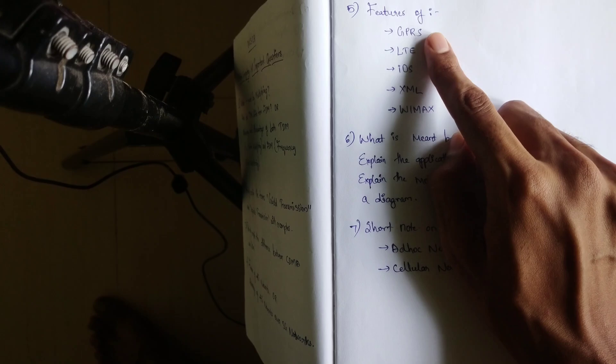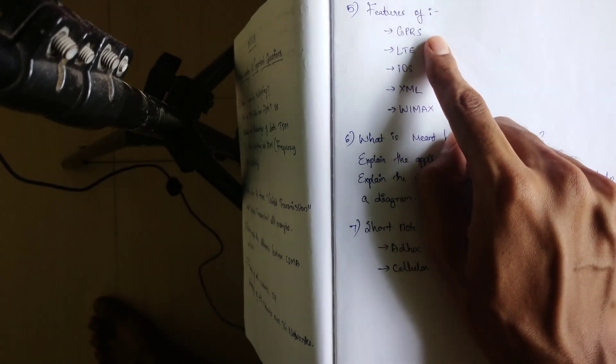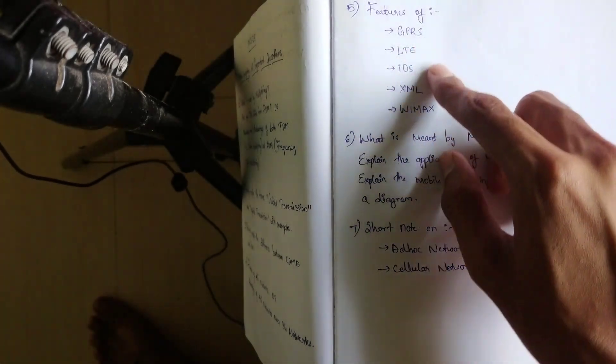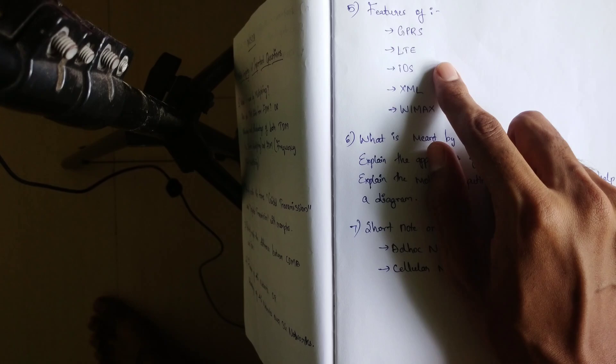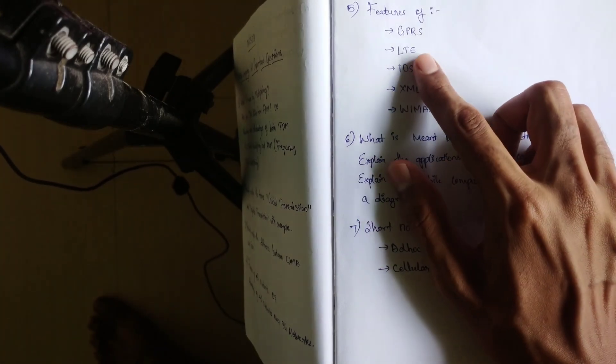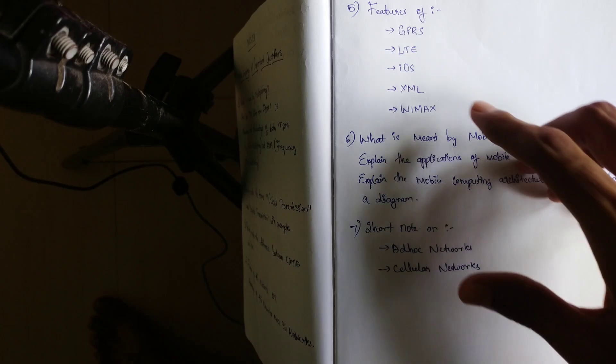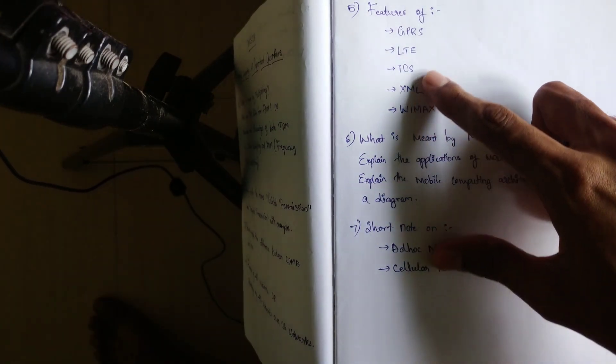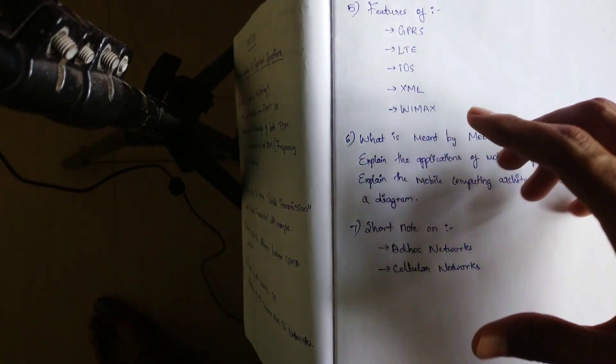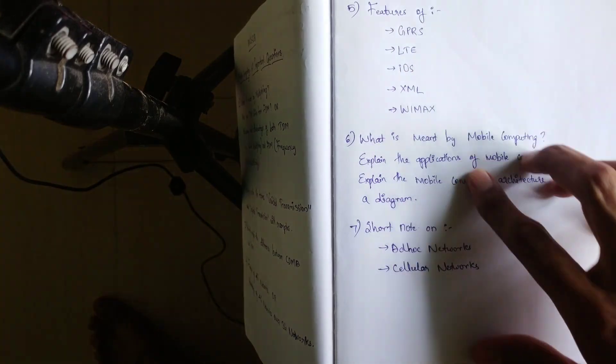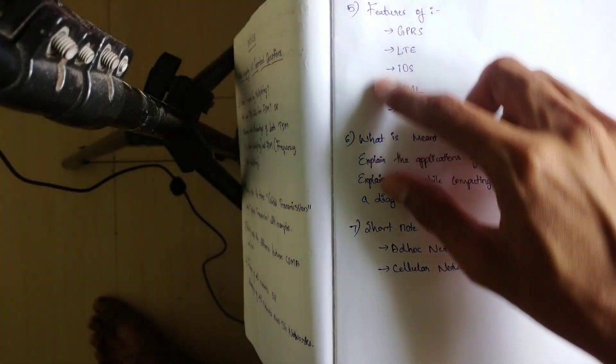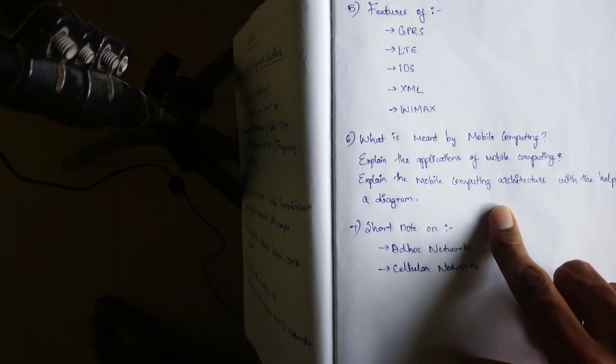Ideally, you can expect 2 to 3 questions from these points. Either it can be asked as GPRS or LTE. So in one year, it is asked as iOS and XML together. In another year, it was asked as GPRS and LTE together. So these are the 5 important topics you can cover. And going to 6 questions.